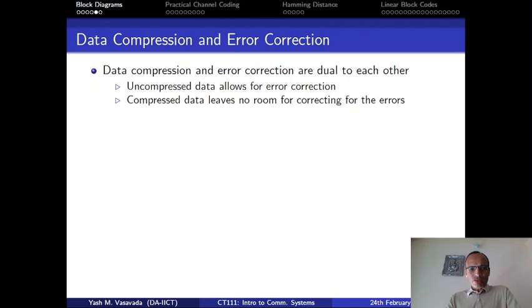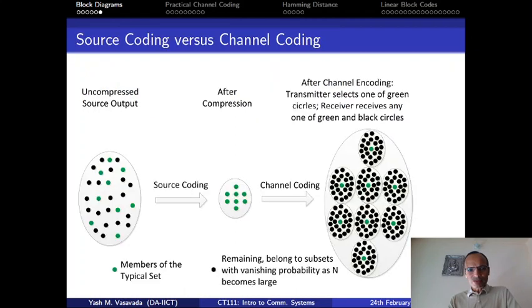We also saw that the data compression and error correction are dual to each other, and this is that duality diagram. The uncompressed data has redundancies, and because of that, there are some strings in the overall set which never occur, but we reserve bits for it. However, unfortunately, that does not allow us to do error correction. But that is made possible by channel coding schemes which introduce back the redundancies in a controlled manner. So we have discussed all of this earlier.